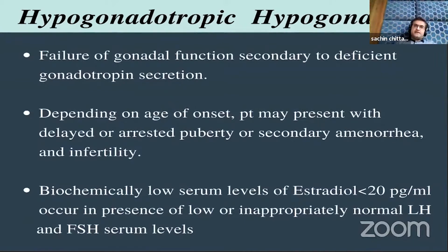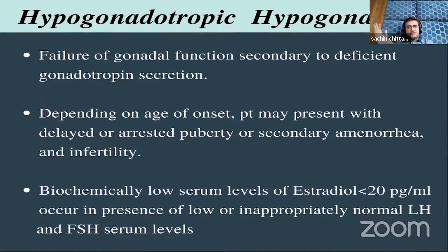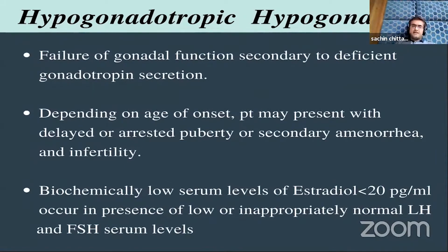Hypogonadotropic hypogonadism is essentially a failure of gonadal function secondary to deficient gonadotropin secretion. Depending on the age of onset, patients may present with delayed or arrested puberty. There are patients who have thelarche, pubic hairs, or some secondary sexual characteristics — it depends on the stage of onset. Biochemically, there is low serum estradiol less than 20 picograms per ml, occurring in the presence of low or inappropriately normal LH and FSH. Sometimes LH and FSH may appear normal, yet the diagnosis of hypogonadotropic hypogonadism is still made.